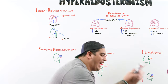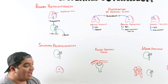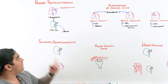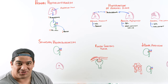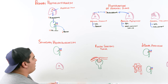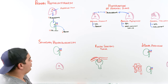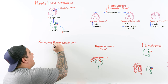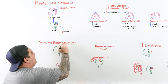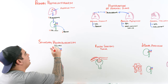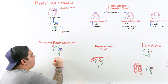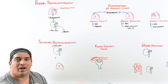What if labs show that the aldosterone level is elevated, but the renin level is also elevated? Start thinking about secondary hyperaldosteronism — it's the exact opposite. For some reason, the patient's JG cells are hyperactive, stimulated for whatever reason, and when they're stimulated, they pump out tons of renin.